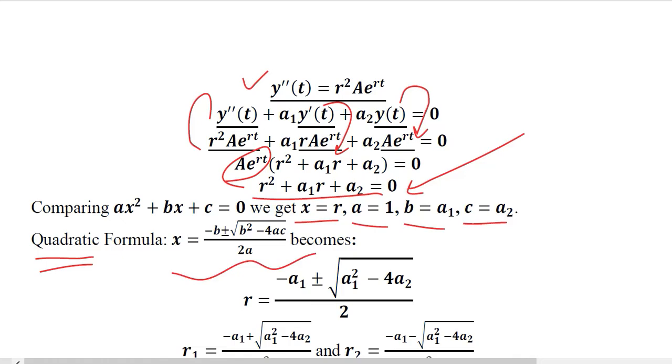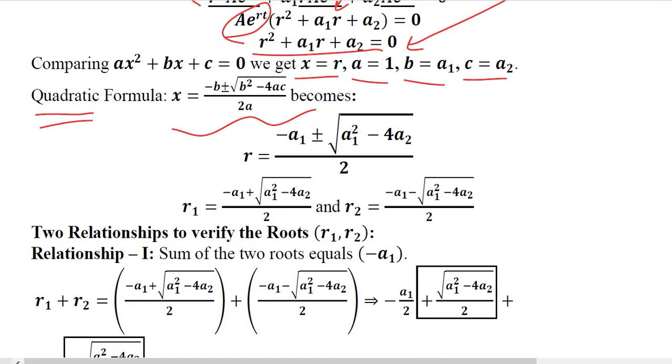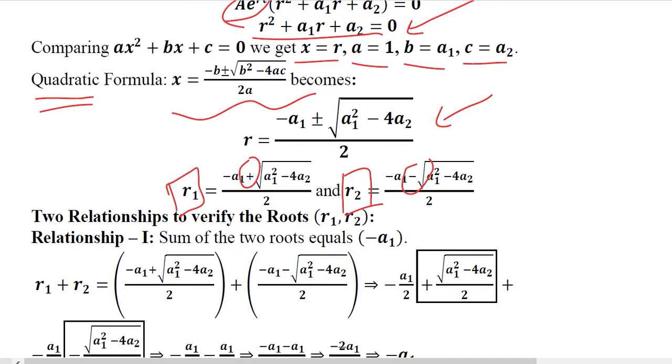So let's apply this quadratic formula and when we do that we get this expression and this can appear once with a plus and then with a minus. And that is why we get two roots of the quadratic equation, that is R1 and R2.